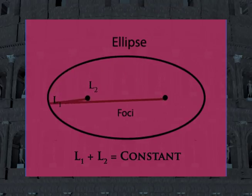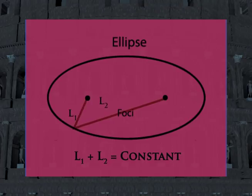The ellipse is the locus of points such that the sum of the distances from the foci to the ellipse is a constant.